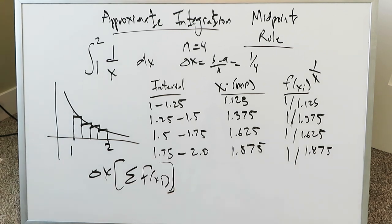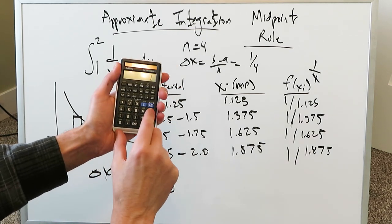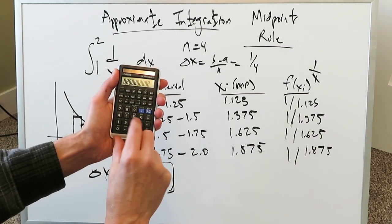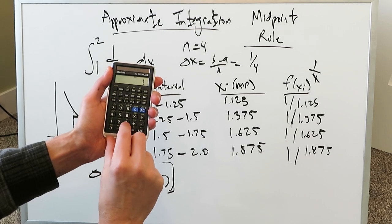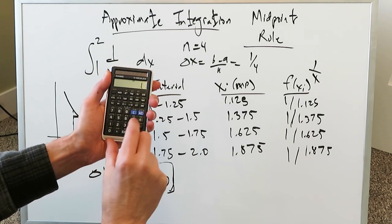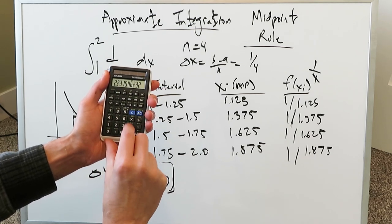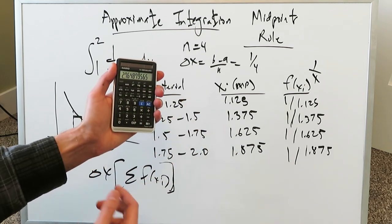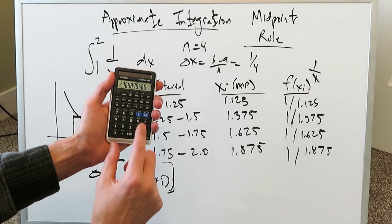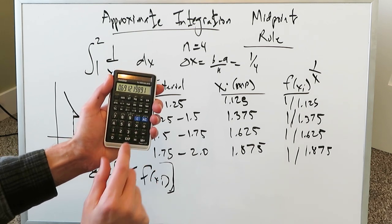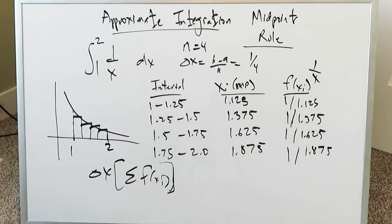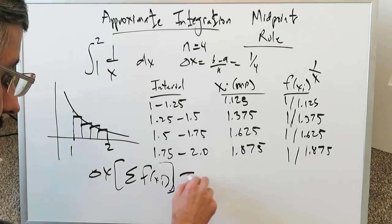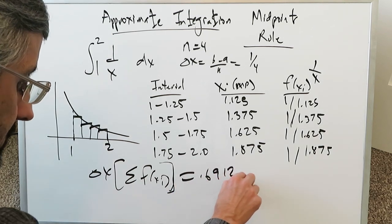You can literally do this all on the calculator. At the end we'll multiply everything by delta x which is 0.25. Let's run these through. We have 1 divided by 1.125 plus 1 divided by 1.375 plus 1 divided by 1.625 plus 1 divided by 1.875. You have all of this coming out as a sum of those values and you multiply this by 0.25. You get a 0.6912 and I'll put that value right over here 0.691219.